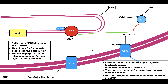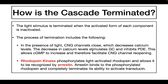So calcium acts as a negative feedback system in order to help the cell stay responsive to light and dark. So how is the cascade going to be terminated? Light stimulus is terminated when the activated form of each component is inactivated, and the process of termination includes basically two mechanisms. In the presence of light, the CNG channels are mainly closed, causing a decrease in calcium levels. This stimulates guanylate cyclase and inhibits phosphodiesterase, allowing cyclic GMP levels to increase and facilitating the CNG channels to reopen. The other mechanism occurs with rhodopsin kinase, which phosphorylates light-activated rhodopsin, allowing it to be recognized by a specific protein called arrestin. Arrestin then binds to the phosphorylated rhodopsin and terminates its ability to activate transducin.